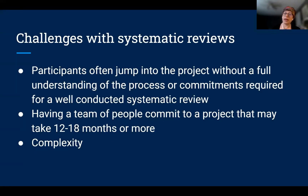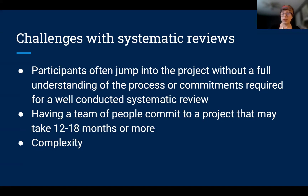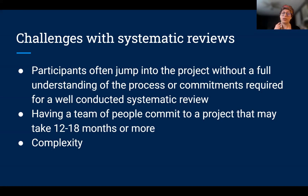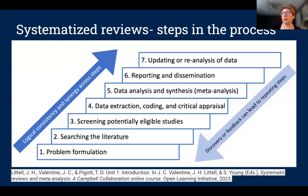Now let's talk about some of the challenges. Often people get really excited and want to jump in — they start looking for articles before they're even ready. Having an idea of the process and the commitments needed for a well-done systematic review is important to know before you get started. These projects can and should take 12 to 18 months or more, so you need a team of committed people who can stick it out through the entire process to publication. They're also complex, with a lot of parts and documentation required.